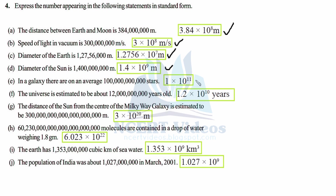Part (f): the universe is estimated to be about a certain number of years old. Significant digits are 1.2. We count all digits — 3, 6, 9, 11 total — and 11 minus 1 is 10. So the age of the universe is 1.2 × 10¹⁰ years.